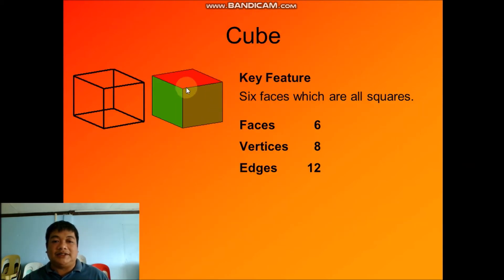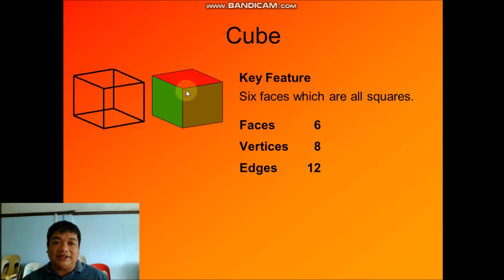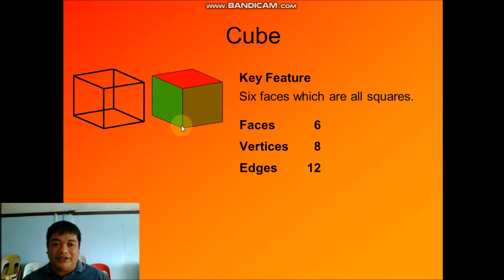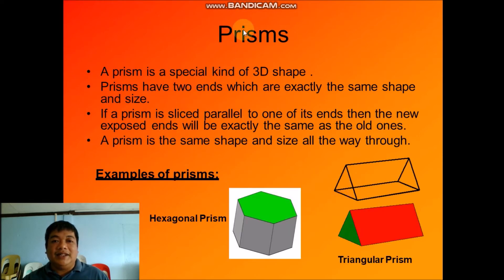There are eight vertices for a cube. The face of a cube is a square, which means a cube has a square face. Since it is a square, all sides of these faces are equal in length. All of the edges of a cube also have equal length.